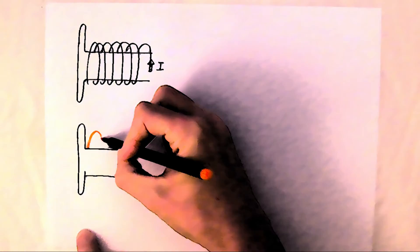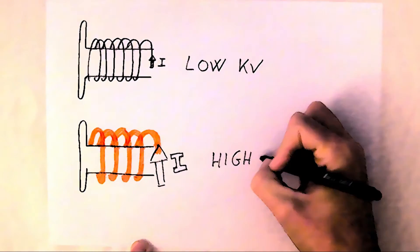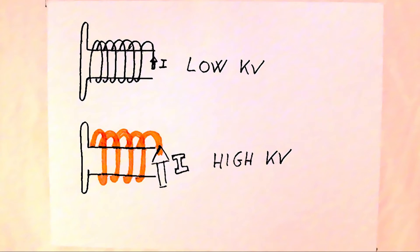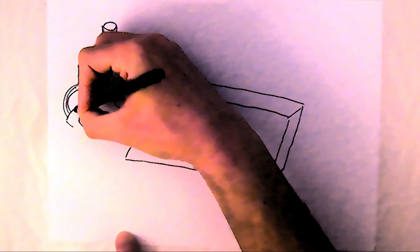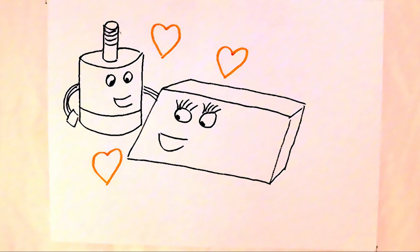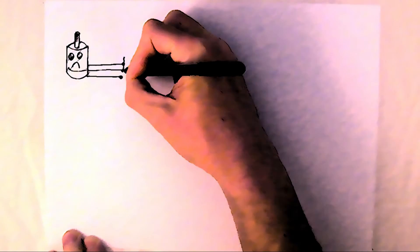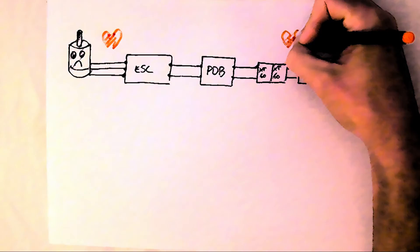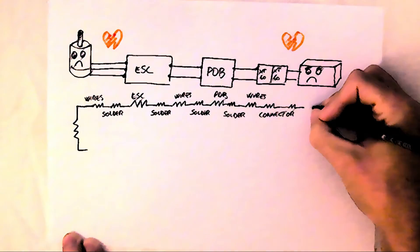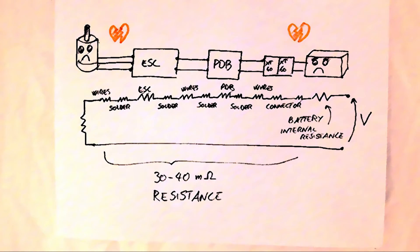A higher kV motor should compensate the lower number of windings with a higher current. Unfortunately, this is exactly true only if the motor and battery are close together. In fact, between them there's a lot of stuff: wires, ESC, PDB, connectors, solder points, and the internal resistance of the battery.